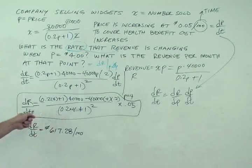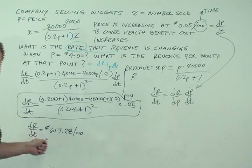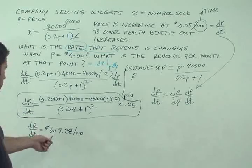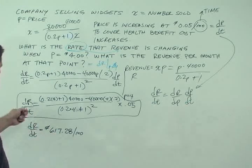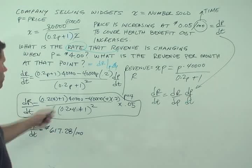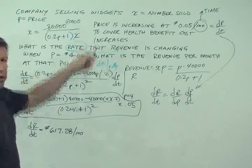So we have this equation for the dr dt term. And then I went ahead and calculated it. It turns out to be $617 in change per month. That's the change in revenue per month when p equals $4.